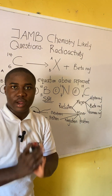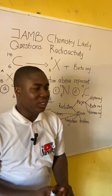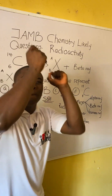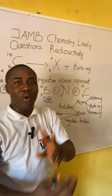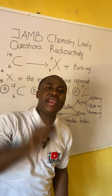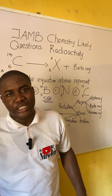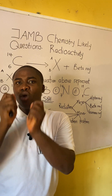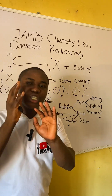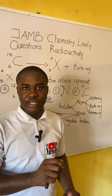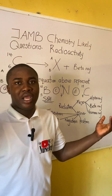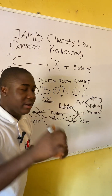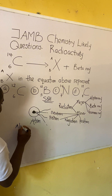Just knowing the names of the radiations won't help you fully in solving questions on balancing nuclear reactions. The other thing you need to know is the symbols of these radiations. All of these radiations have their respective symbols, and from knowing the symbols you are good to go. So I'm about to cover all the symbols of these radiations, and then we will tackle the question.